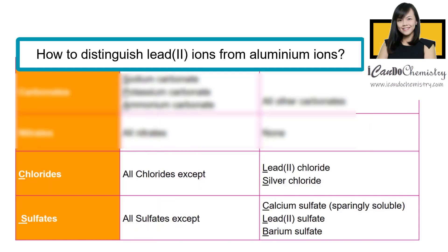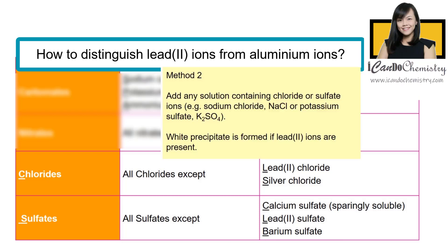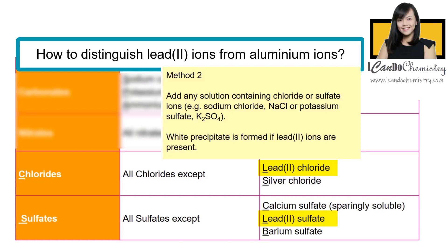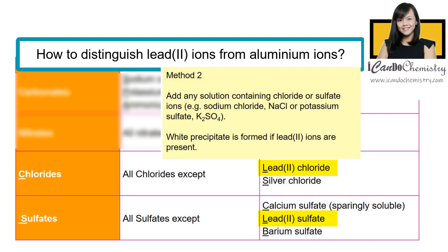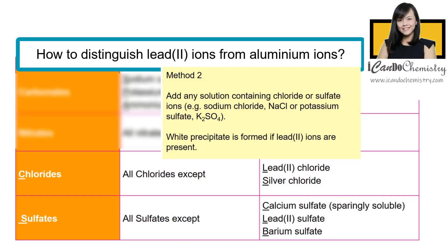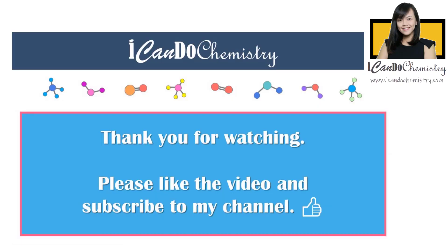To distinguish aluminium ions from lead-2 ions, we make use of this solubility rule. We add any solution that contains sulfate ions or chloride ions, since only lead-2 ions will form a precipitate with chloride and sulfates. If a white precipitate is formed, then we can confirm that the cation present in the unknown solution must be lead-2 ions. If there is no precipitate, then the cation present must be aluminium ions.